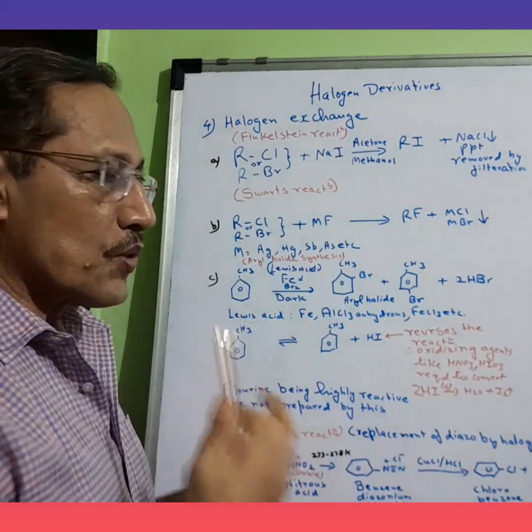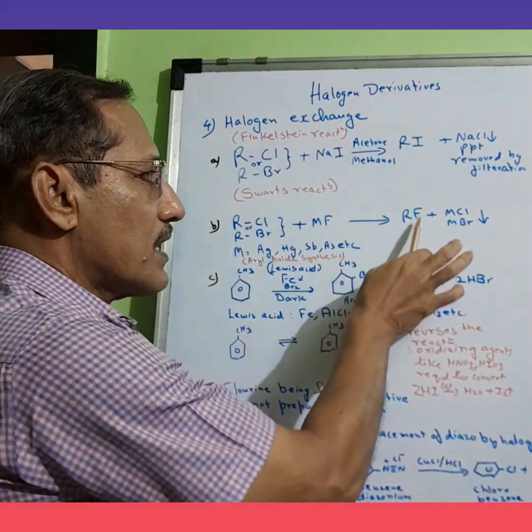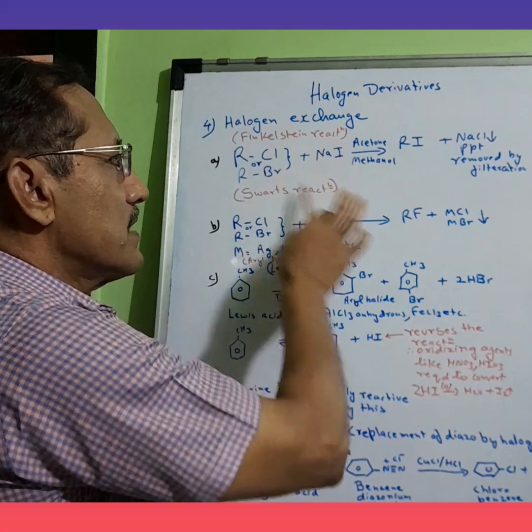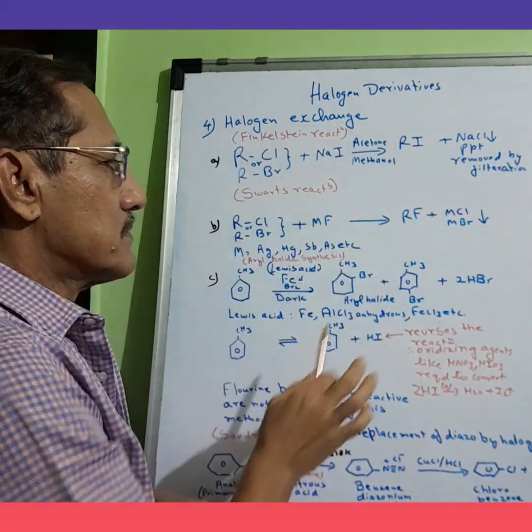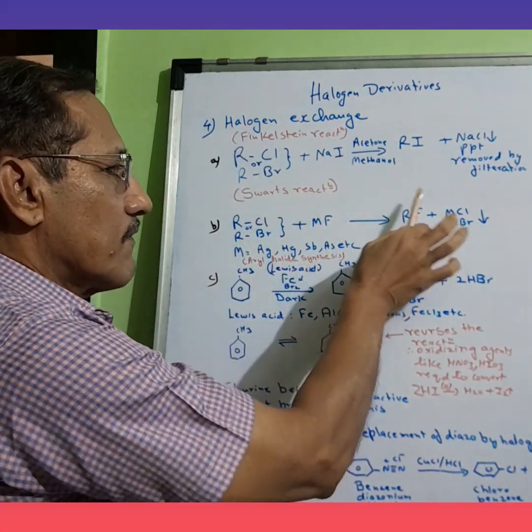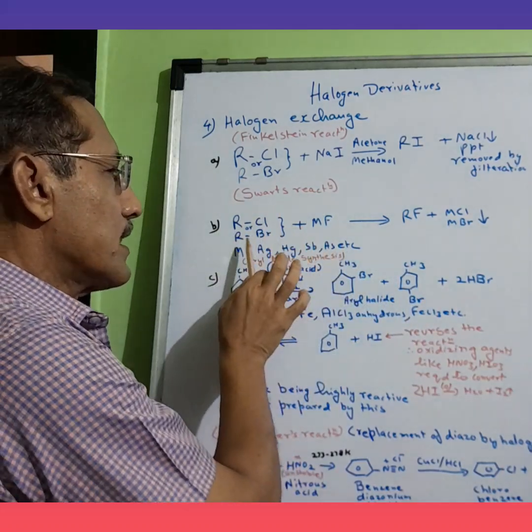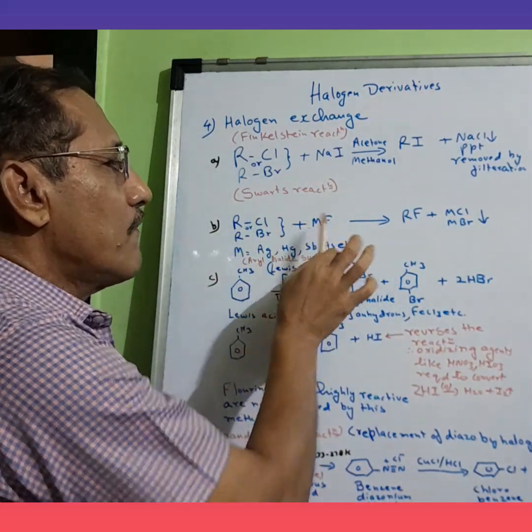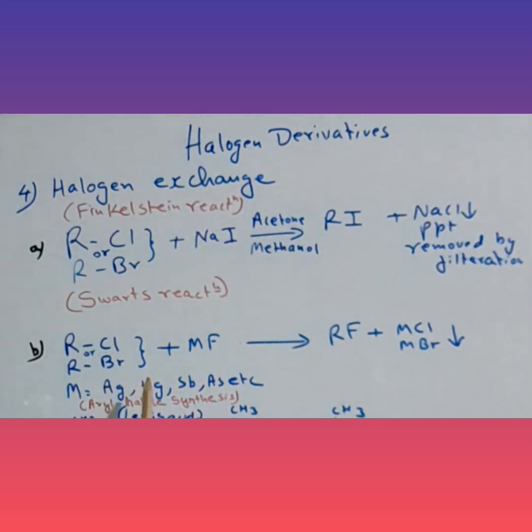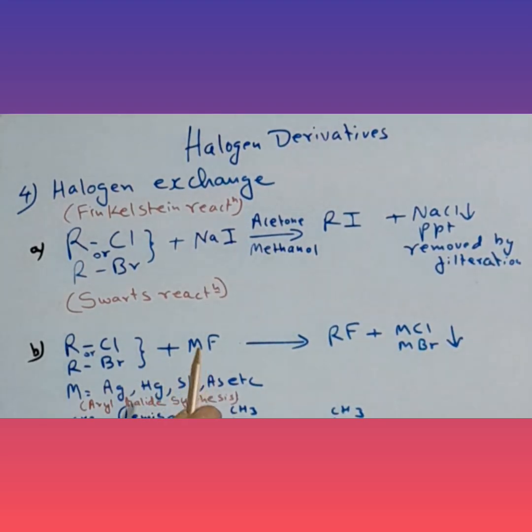In Swartz reaction, we synthesize alkyl fluoride. Alkyl chloride or alkyl bromide is treated with metal fluoride. The metal could be silver, mercury, antimony, arsenic, etc. We end up with alkyl fluoride.